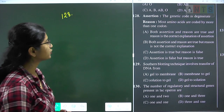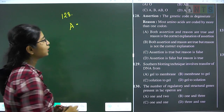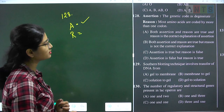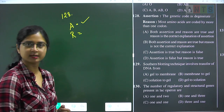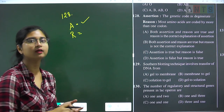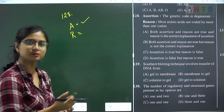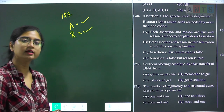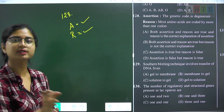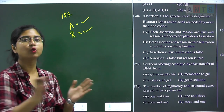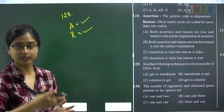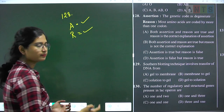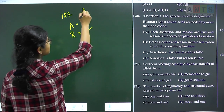Question 128 is an assertion-reason question. Assertion: the genetic code is degenerate — true. Reason: most amino acids are coded by more than one codon — true. The genetic code is called degenerate because multiple codons are responsible for a single amino acid. The reason correctly explains the assertion. Question 128 answer is option A.